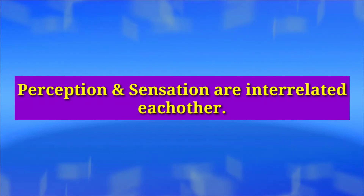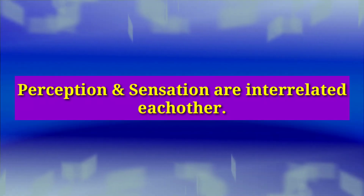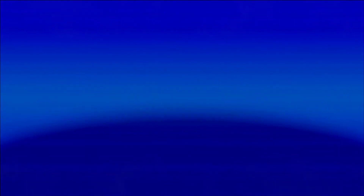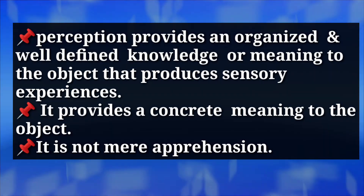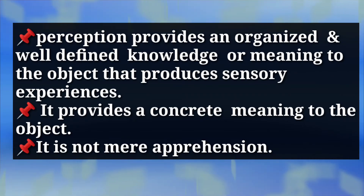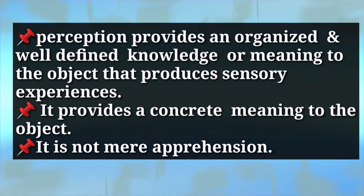Both cognitive processes serve useful purposes in knowing the world around us. For a perceptual experience to occur, sensory experience is a must — we cannot perceive any object or event unless we first sense them. Hence, sensation and perception are interrelated to one another, though they differ very minutely from each other. Perception provides organized and well-defined knowledge or meaning to the object that produces sensory experiences — it provides a concrete meaning, not mere apprehension.